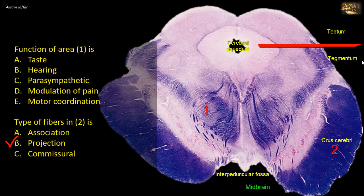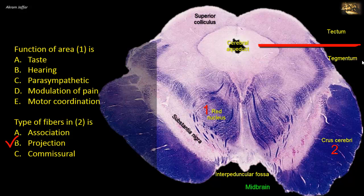Area one is located in the tegmentum next to the substantia nigra. It is X-shaped in three dimensions but appears circular in cross section, located at the level of the superior colliculus. The name red nucleus is derived from its pinkish hue in fresh, unstained sections due to its high vascularity. The red nucleus is involved in motor coordination and is part of the extrapyramidal motor system. It receives input from the cerebellum and cerebral cortex and projects to the inferior olive and cervical spinal cord via rubrospinal fibers.